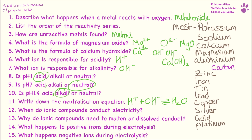When do ionic compounds conduct electricity? That is when they are molten or dissolved so that the ions are free to move around. They will not conduct electricity in the solid state, because the ions need to be free to move.